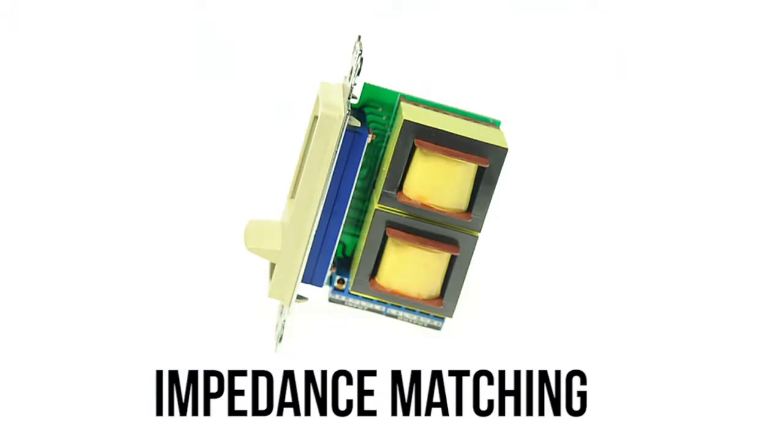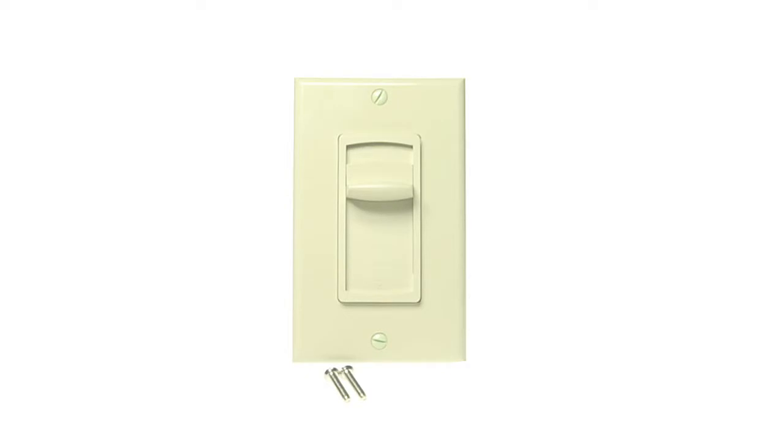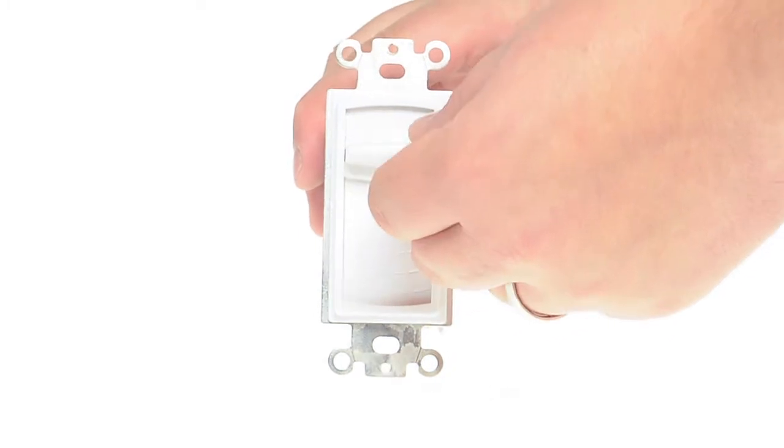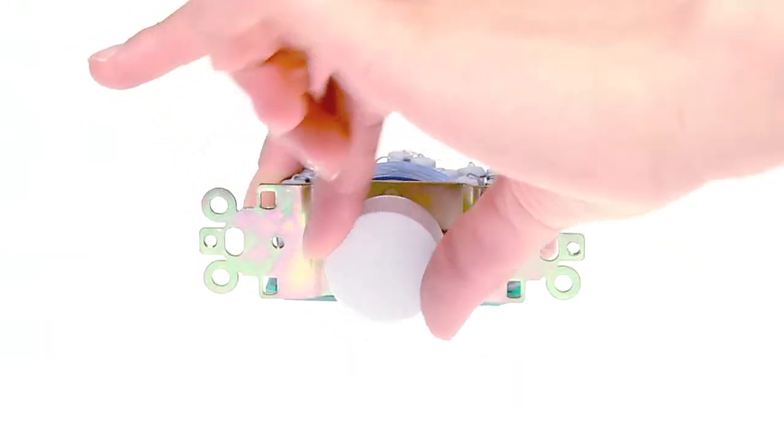Impedance-matched volume controls are used for installs of three or more speakers. Impedance-matching volume controls also come in two different types: sliding and rotary knob versions up to 100 watts RMS.